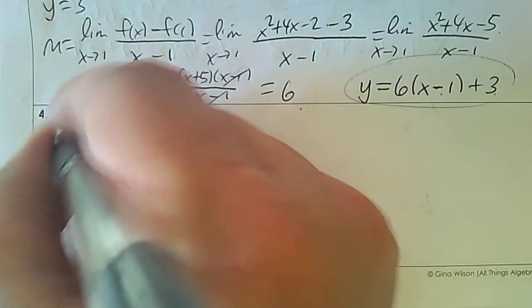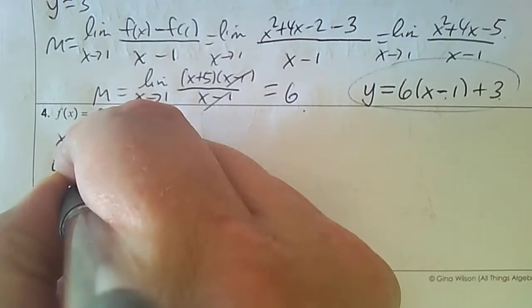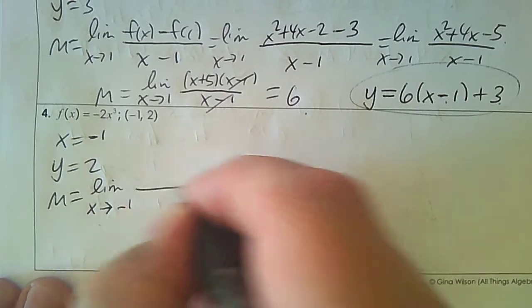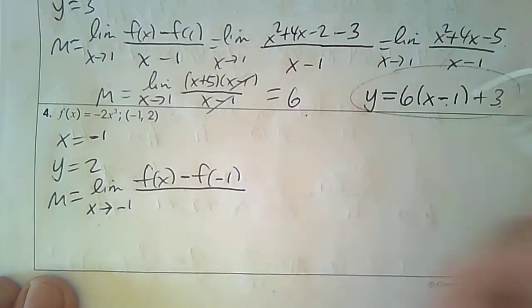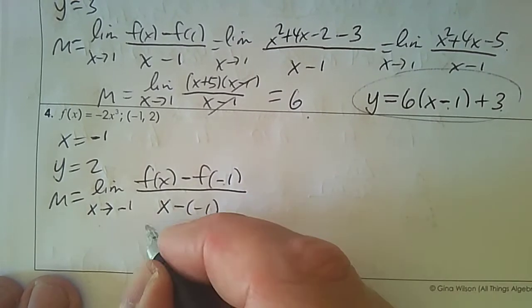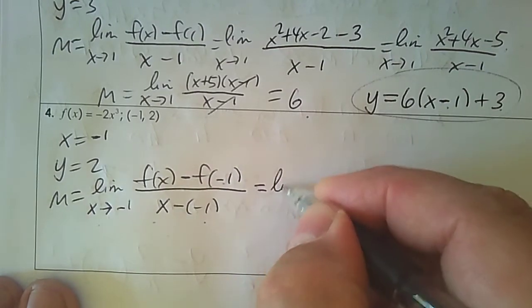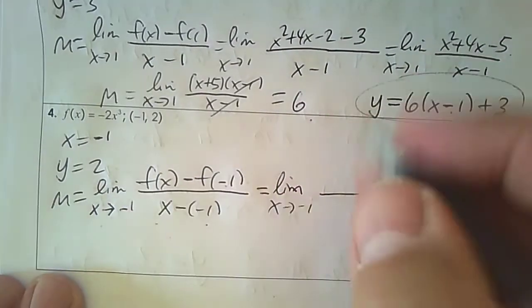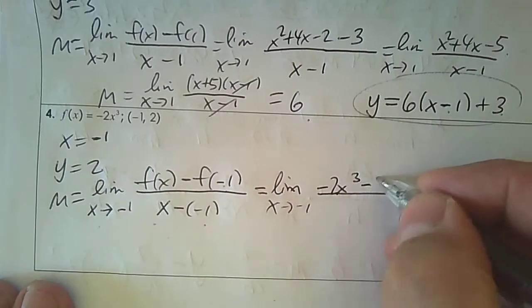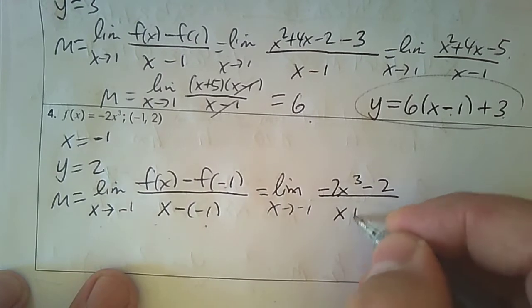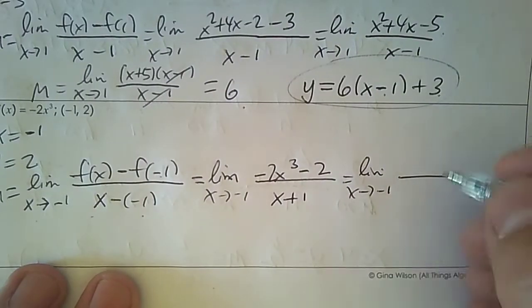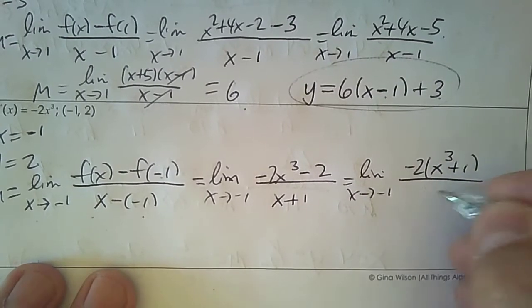Number 4: I want to find the equation of the tangent line. I already know x is negative 1 and y is 2, and I need to find the slope. We use the limit as x approaches negative 1: [f(x) minus f(-1)] over [x subtract negative 1], which is x plus 1. In the numerator, f(x) is negative 2x³, and the y value when you plug in is positive 2, so subtract 2. The denominator is x plus 1. I'm going to factor out a negative 2, getting (x³ plus 1) over (x plus 1).